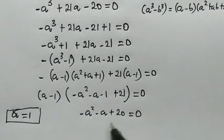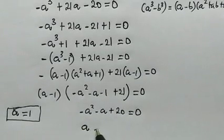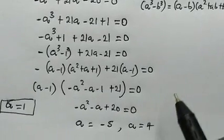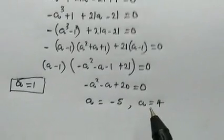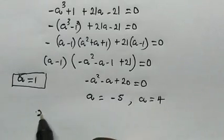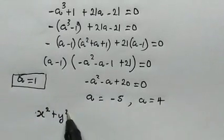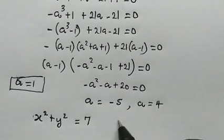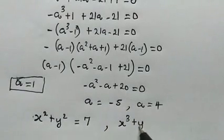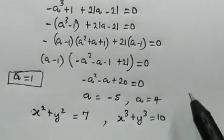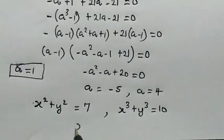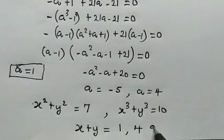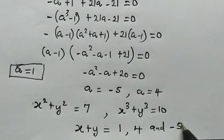So here we have our solutions. This is a very nice Olympiad mathematics problem. We're given x squared plus y squared equals 7 and x cubed plus y cubed equals 10. Therefore, x plus y has three solutions: x plus y is equal to 1, x plus y is equal to 4, and x plus y is also equal to negative 5. Amazing.